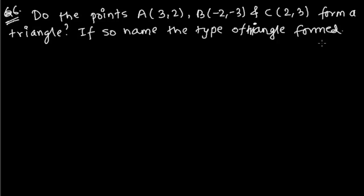First we have to show whether these points A, B, and C are forming a triangle or not. If they are forming a triangle, then we have to show which type of triangle they are forming — it may be a right angle triangle, equilateral triangle, or something else. So that we have to find out first.